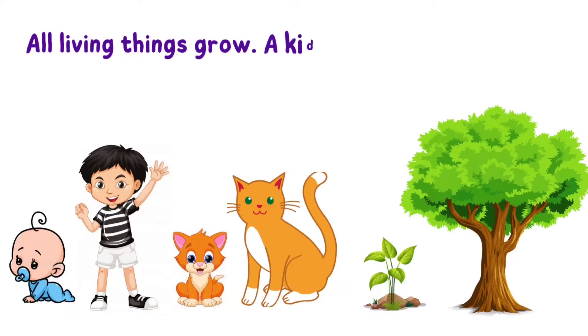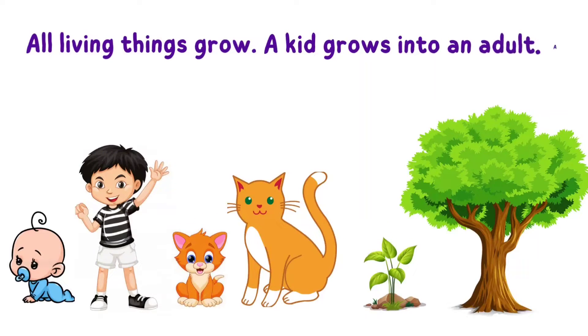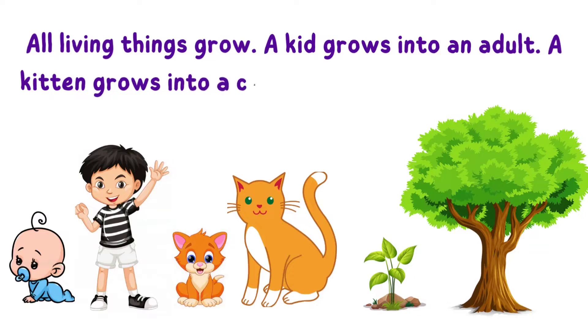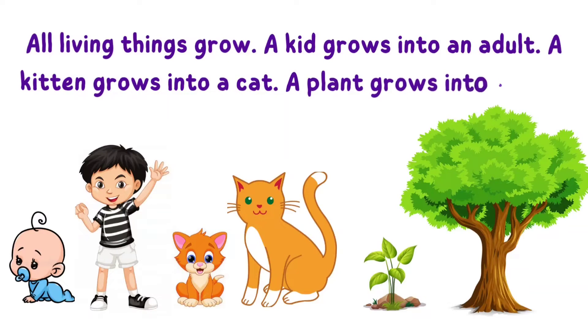All living things grow. A kid grows into an adult. A kitten grows into a cat. A plant grows into a tree.